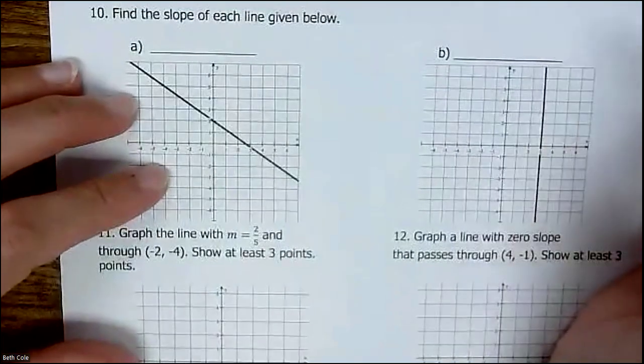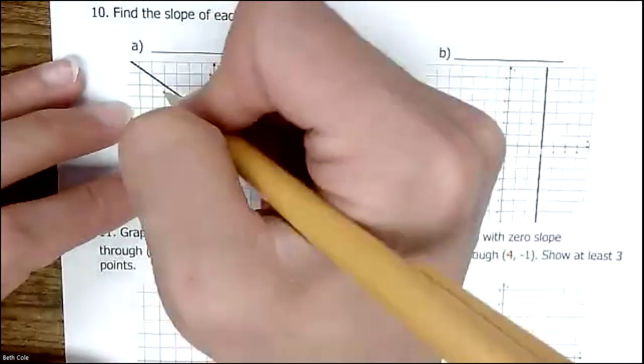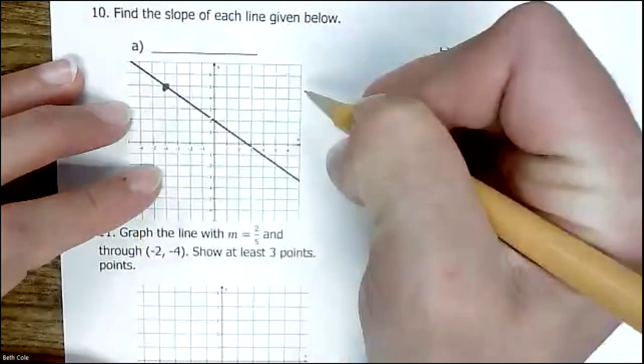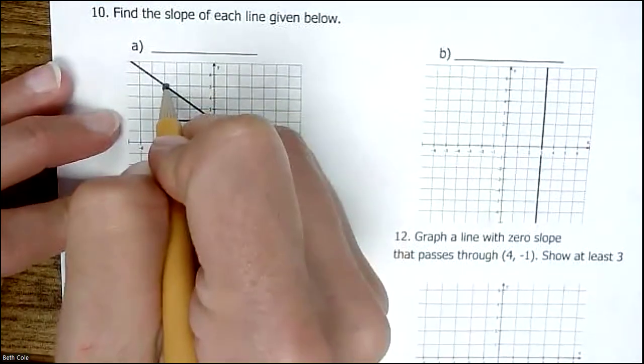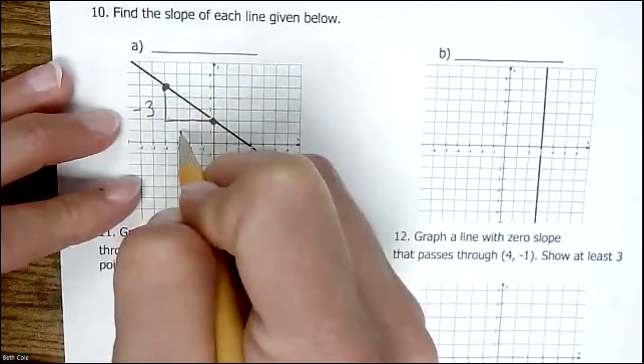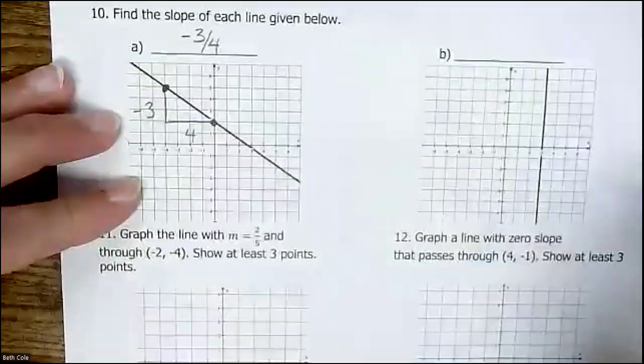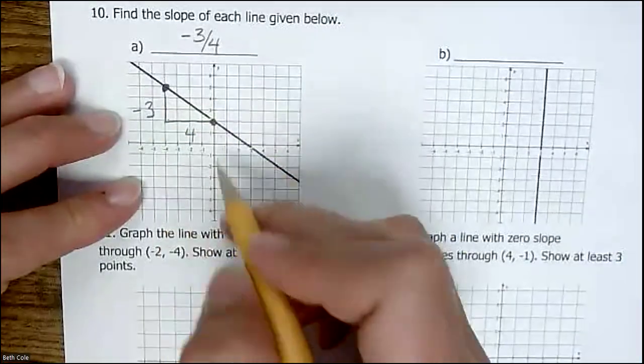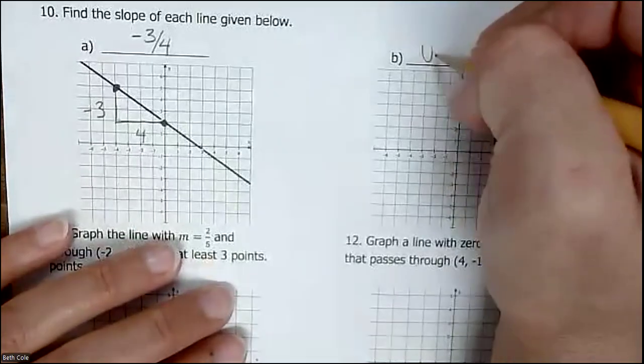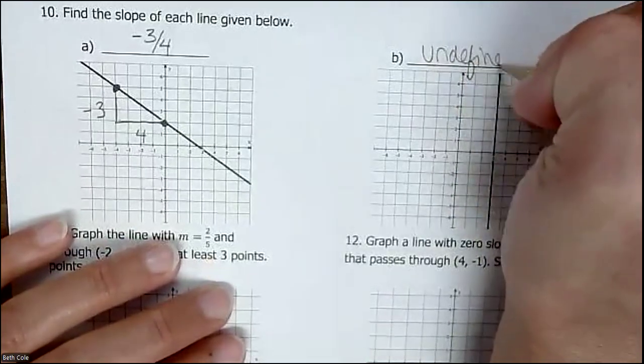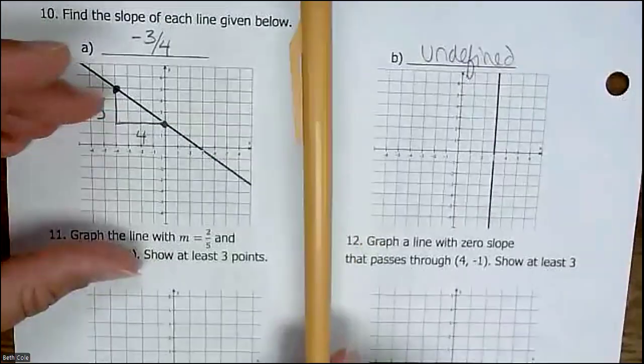Right here, we're going to look at the graph and find the slope. You need to find pretty points, ones that land on nice whole numbers. I've got one there and one there. I'm going to draw in my triangle. This went down 3 and then over 4, so negative 3 fourths. If the line was going up, it would be positive. This is a vertical line that is undefined, undefined slope. This way is 0, this way is undefined.